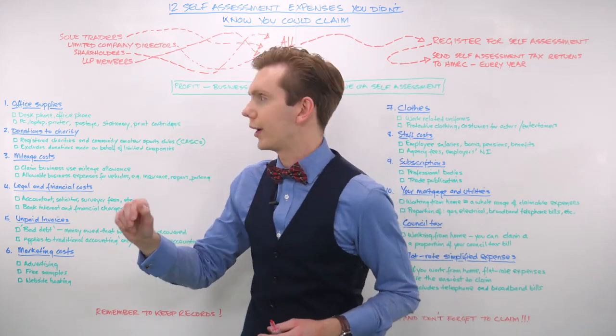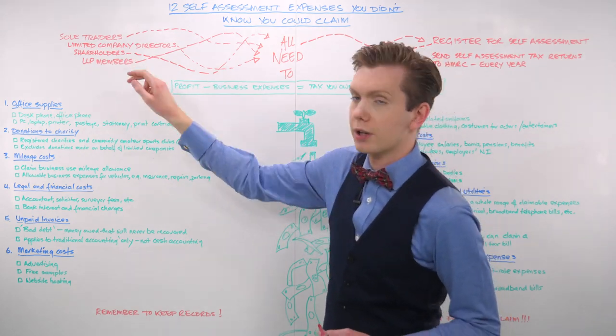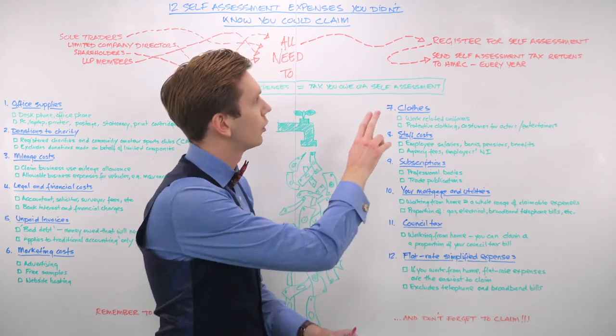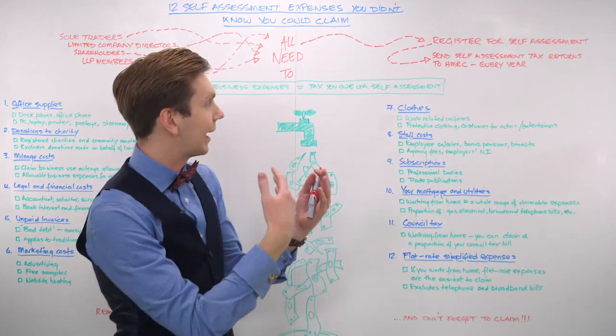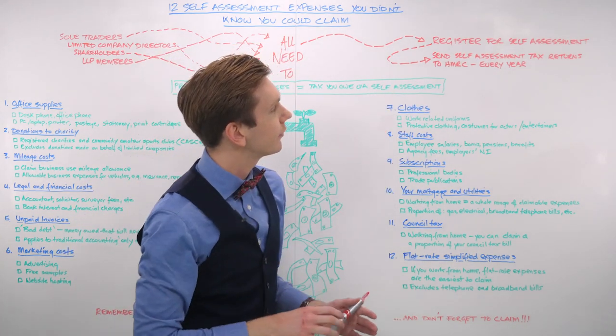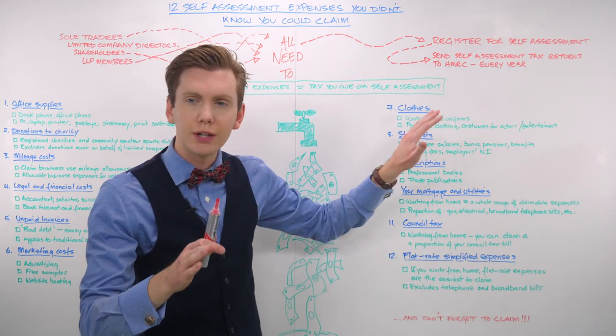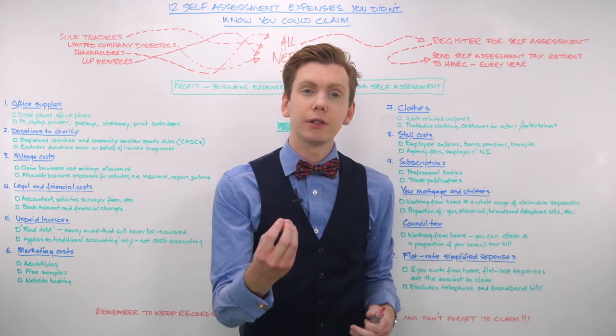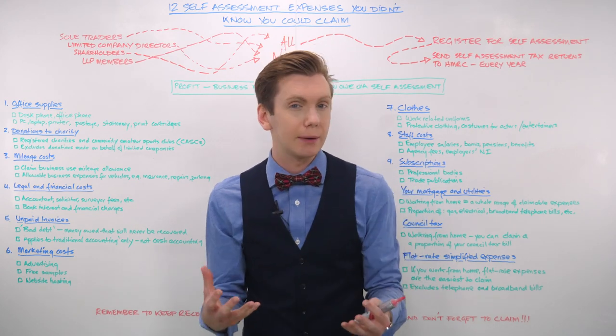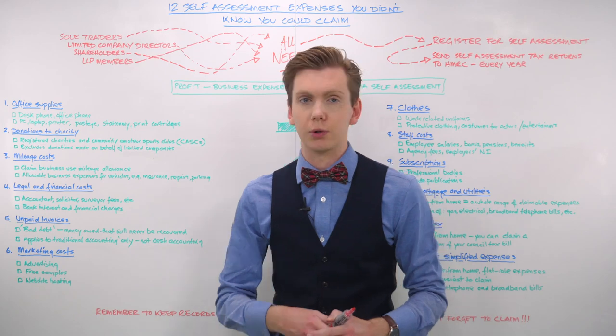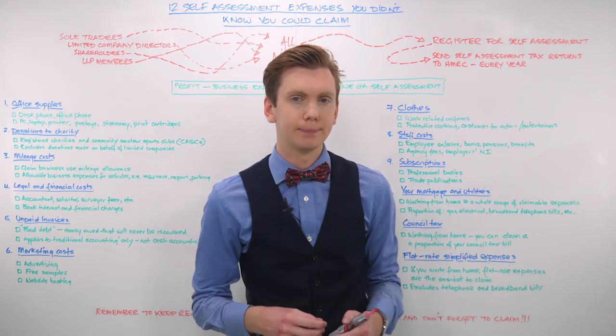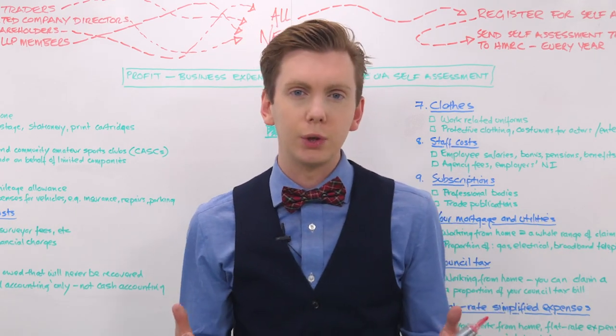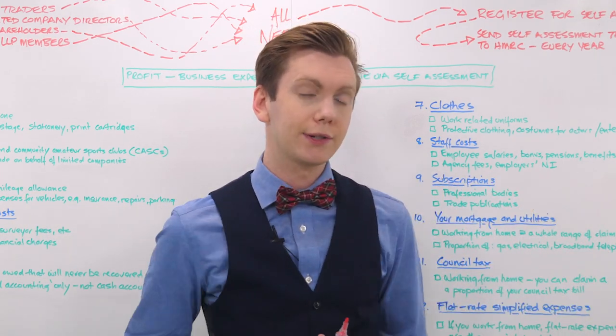Self-employed sole traders, limited company directors, shareholders and LLP members, all of these are obligated to register for self-assessment and in turn to send in self-assessment tax returns to HMRC every single year. And based on their earnings, most individuals will need to pay income tax and national insurance contributions on their taxable income. The amount you owe will vary dramatically depending on how much profit you made in the previous tax year.